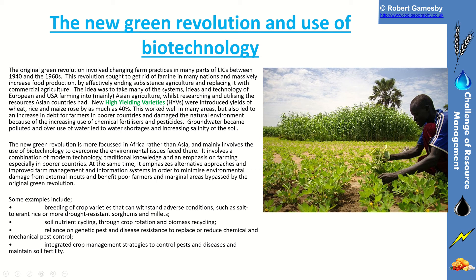It worked well in many areas, but also led to debt for some farms as they had borrowed money to pay for everything. It also damaged the natural environment through more use of chemical fertilisers and pesticides, groundwater became more polluted, and there were issues with overuse of water. The new green revolution is similar, but it focuses on Africa rather than Asia.